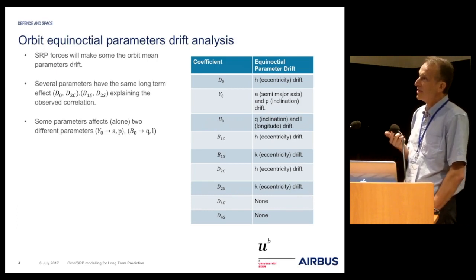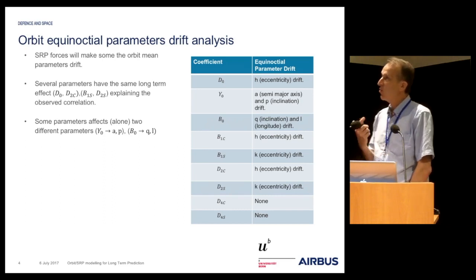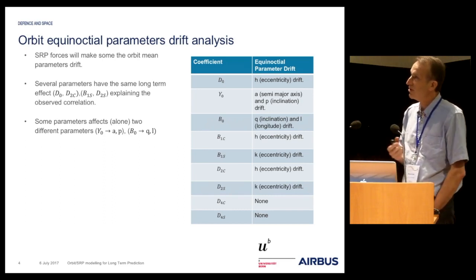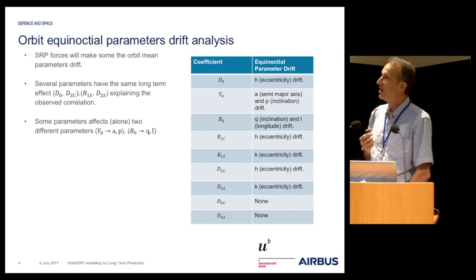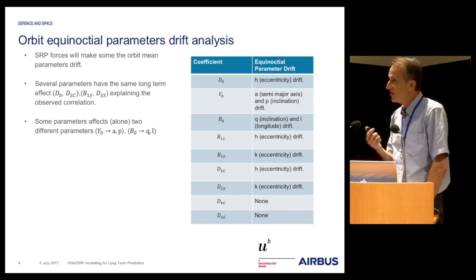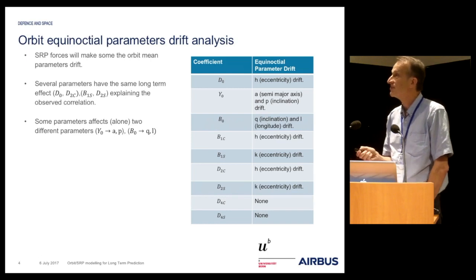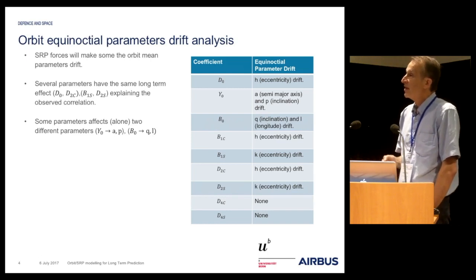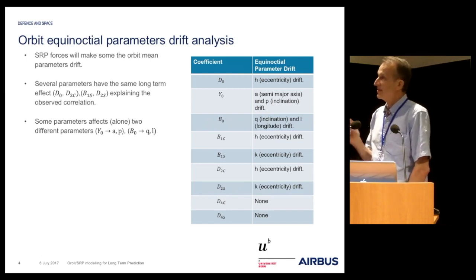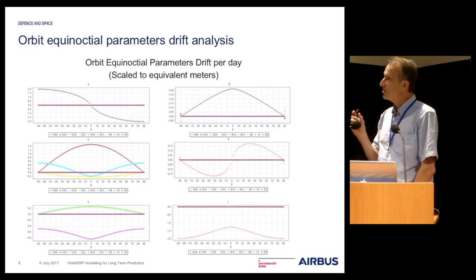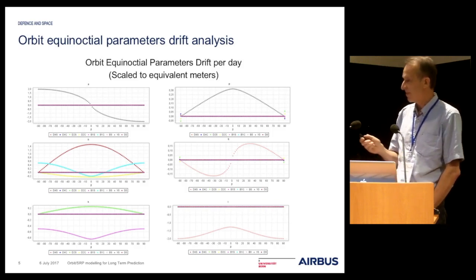Some parameters affect along two different parameters: namely Y0 affects the semi-major axis and the inclination P, and B0 affects the inclination Q and the longitude drift. These are the curves of the impact of each ECCOM parameter on the six orbit parameters.